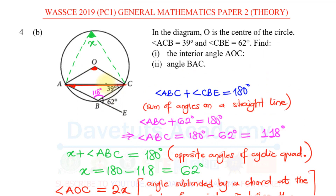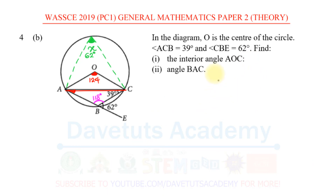So angle AOC is 124° and angle X is 62°. Now I can go ahead and solve the second part of the question. To find angle BAC: we already have angle AOC = 124°. Looking at angle BAC — since we know angle ABC = 118° and angle ACB = 39° — this is simply a triangle problem.